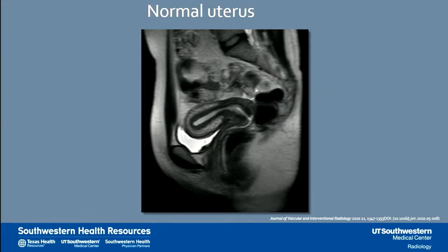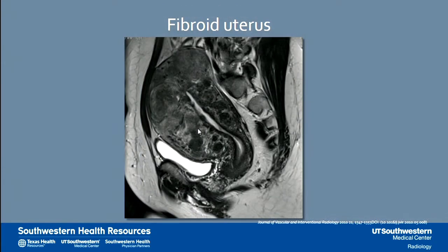Here is an MRI of the pelvis — a sagittal T2-weighted MRI. We know it's T2 because fluid is bright. This is a normal uterus, showing the fluid-filled endometrial cavity, the lower signal myometrium, and the more high signal endometrium. This is a fibroid uterus — you can see it's remarkably different. It's a large, bulky uterus distorting the pelvic contents and compressing the bladder, which is why a lot of patients experience urinary frequency.